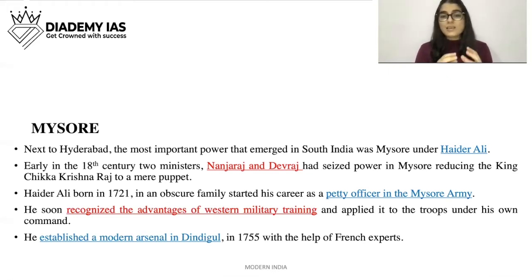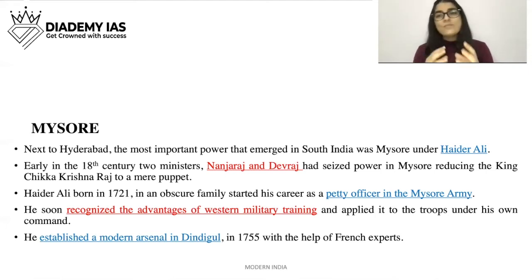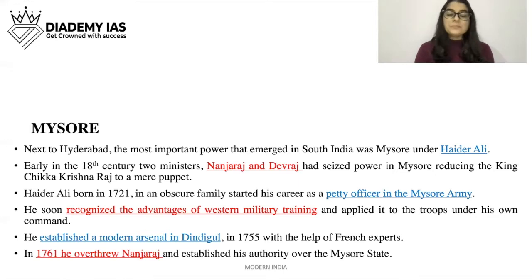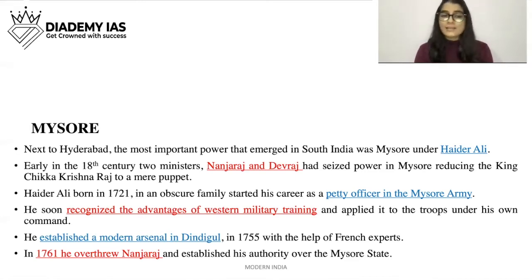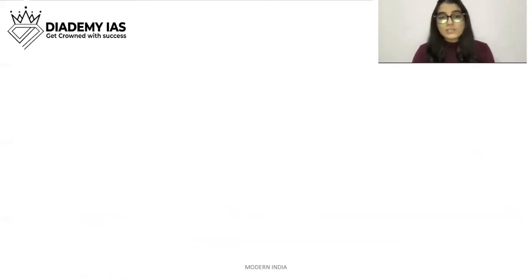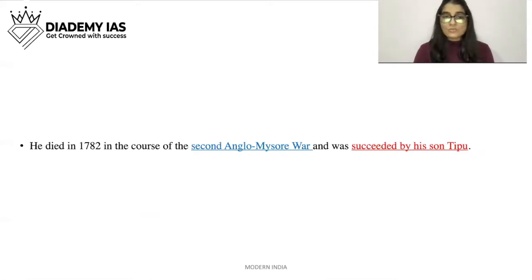In 1755, with the help of French experts, Hyder Ali built up his power, and in 1761 he overthrew Nanj Raj and established his authority over the Mysore state. He died in 1782 in the course of the Second Anglo-Mysore War and was succeeded by his son Tipu Sultan.